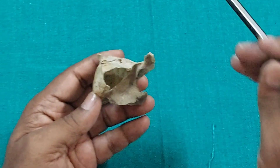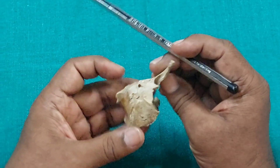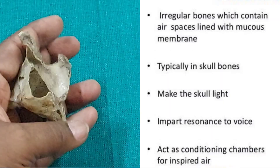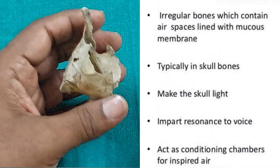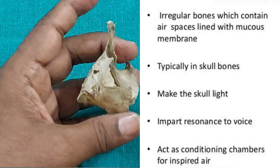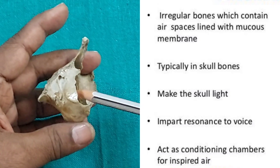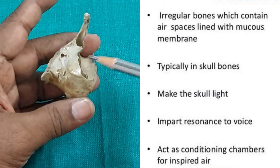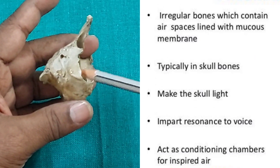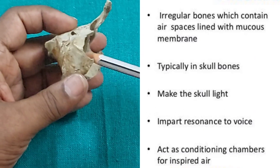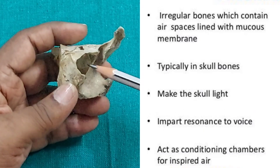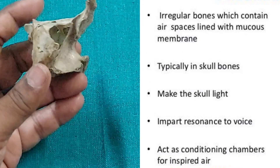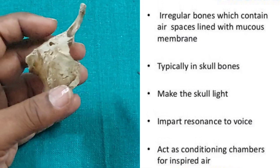The importance of the air sinuses in pneumatic bones is threefold: first, they lighten the bone making it very light in weight; second, the sinuses add resonance to the voice, acting as a resonating chamber; and third, they add temperature and humidity to inspired air, acting as an air conditioning chamber.